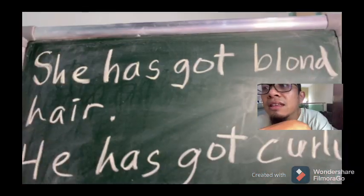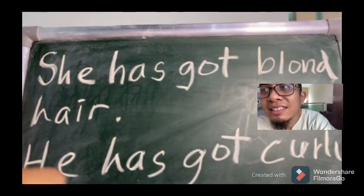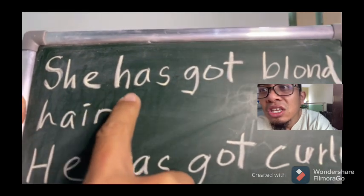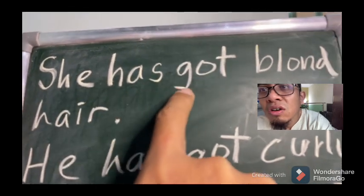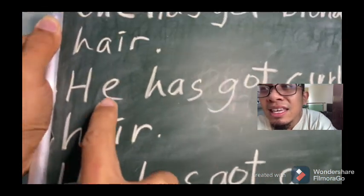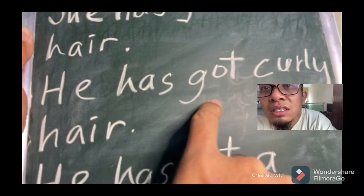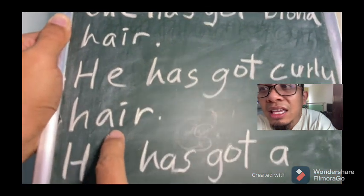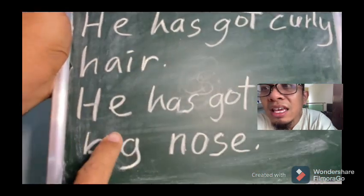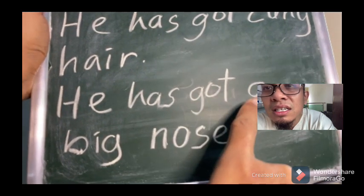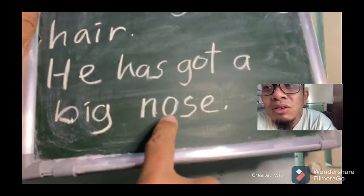Look at these sentences: She has got blonde hair. He has got curly hair. And he has got a big nose.